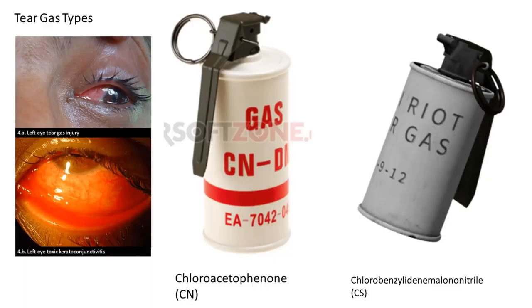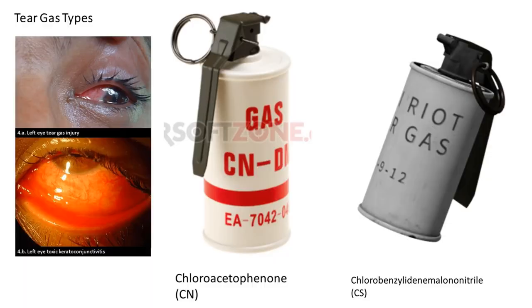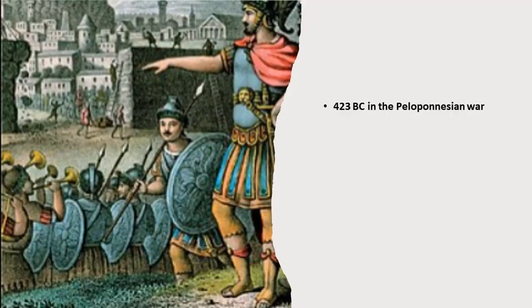There are two main types of tear gas: CS and CN. Other than these two types, there are many types of tear gases that have been used since 400 BC. These types of agents are called crowd controlling agents — that is the technical term.